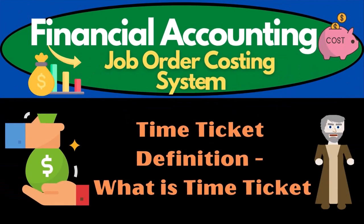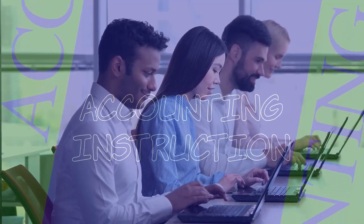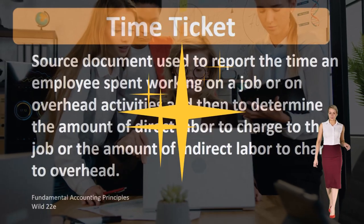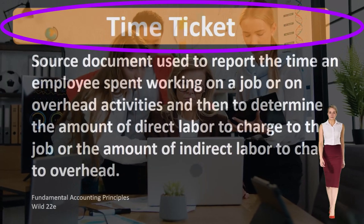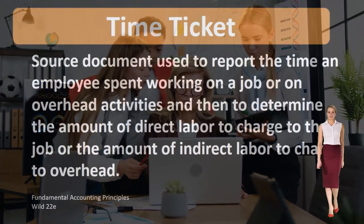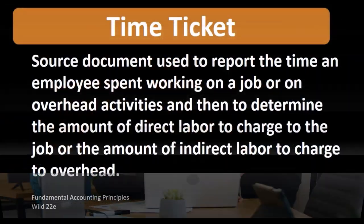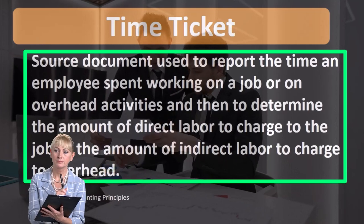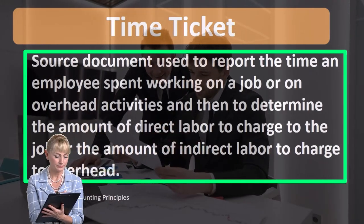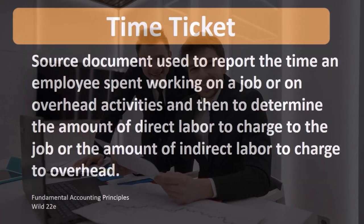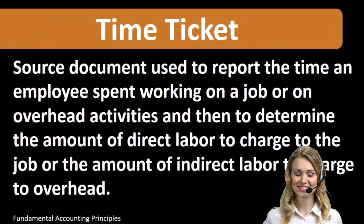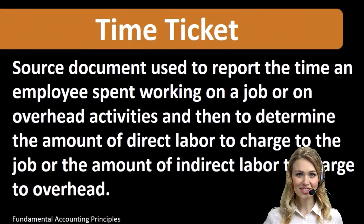In this presentation we will define time ticket. According to Fundamental Accounting Principles, Wild 22nd edition, the definition of time ticket is a source document used to report the time an employee spent working on a job or on overhead activities, and then to determine the amount of direct labor to charge to the job or the amount of indirect labor to charge to overhead. When considering a time ticket in this context, we're thinking about the tracking of time for an employee for the reason of applying the cost of that time to a job cost system.